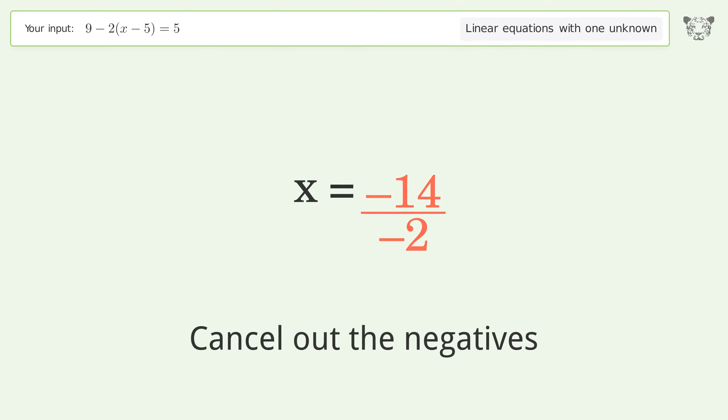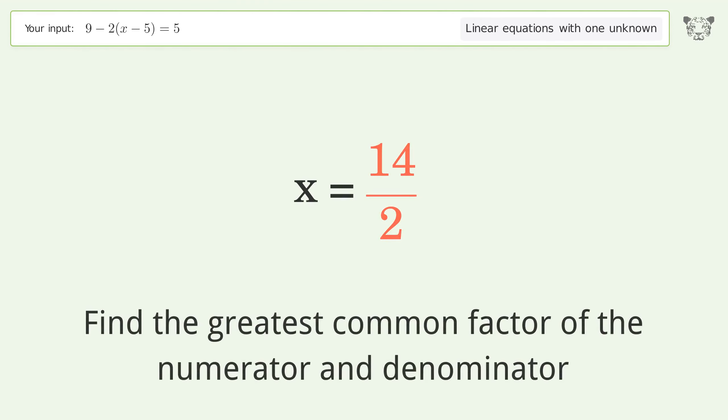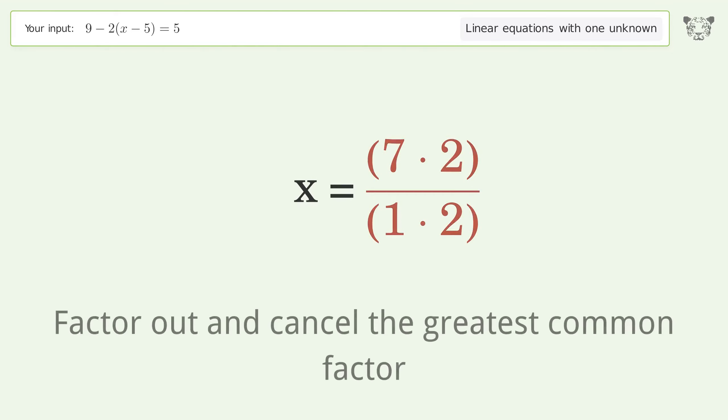Cancel out the negatives. Find the greatest common factor of the numerator and denominator. Factor out and cancel the greatest common factor.